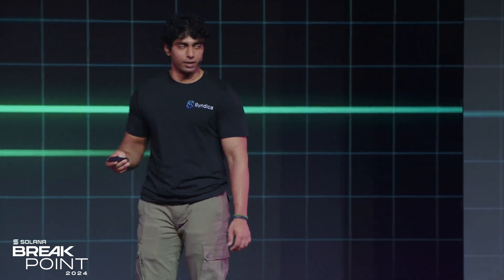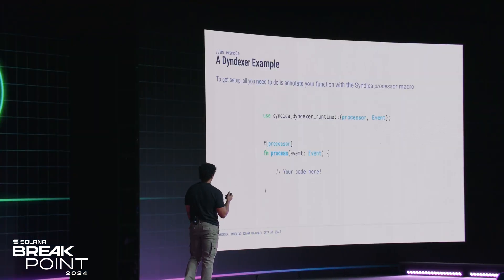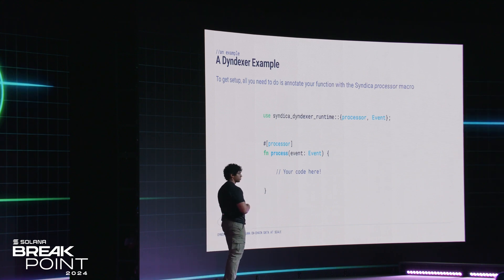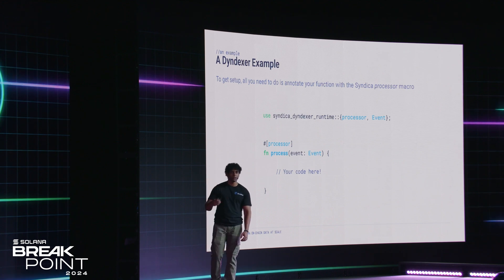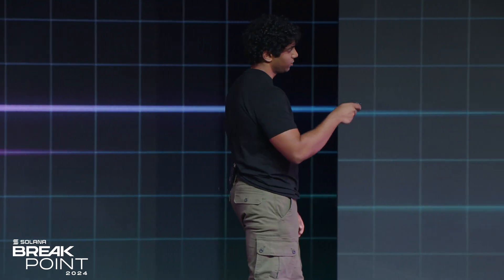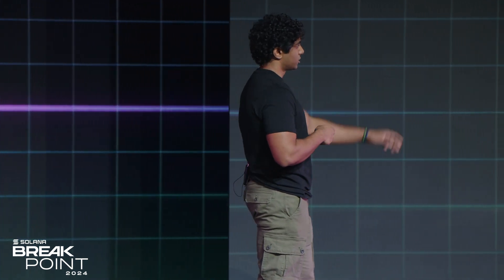Let's create a quick Indexer for the Jupyter aggregator. This is a great example of how you can write an Indexer for a single protocol, but keep in mind it's really flexible — you can index multiple protocols in the same program. All Indexer programs are pretty simple. They start off with the Syndica Indexer runtime — you import the library, import the processor macro, and decorate one of the functions of your project as the entry point. This is the function that gets executed every time our runtime has new data for your Indexer to index. At this point, data has already been filtered. The event type is really just between a transaction and an account that you're interested in.